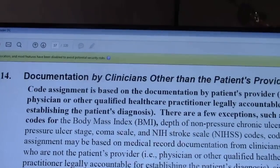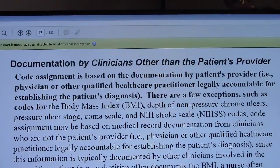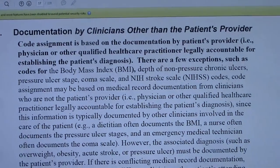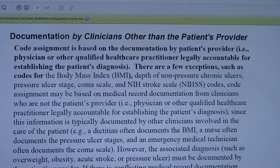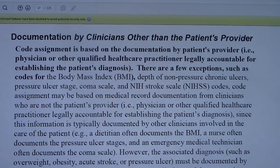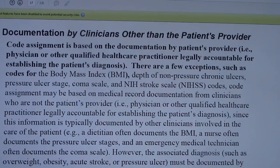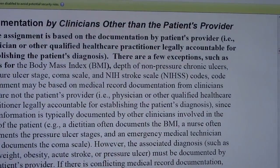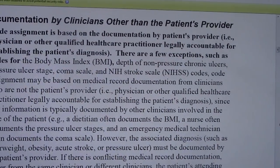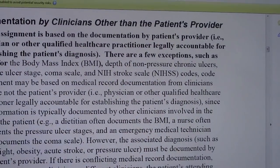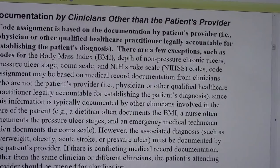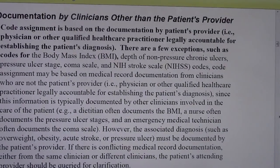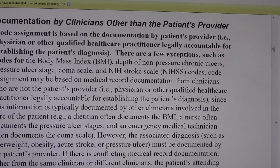So with that in mind, let's look at 1B14. It says 'documentation by clinicians other than the patient's provider.' Code assignment is based on the documentation by the patient's provider — the physician or other qualified health care practitioner legally accountable for establishing the patient's diagnoses. But there are a few exemptions, such as codes for body mass index (BMI), depth of non-pressure chronic ulcers, pressure ulcer stage, coma scale, and NIH stroke scale — the NIH SS codes.